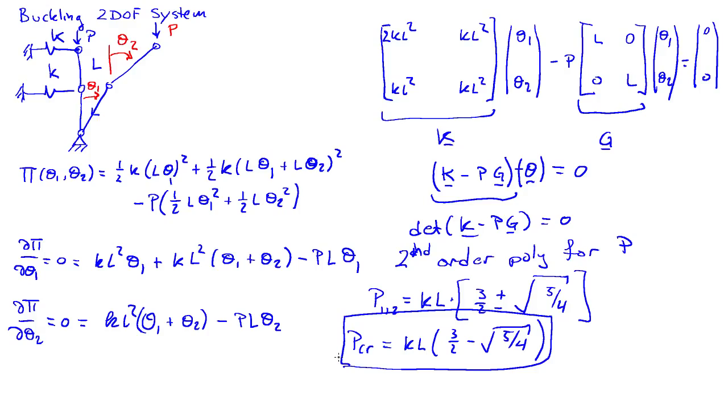If we'd like to know the configuration of the system at this buckling load, we can plug our value for P critical back into these equations, and then solve for theta. That's solving for the eigenvector, which tells you the buckling mode or buckling shape.